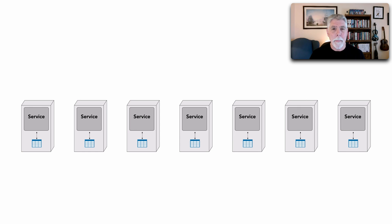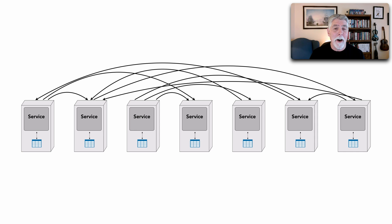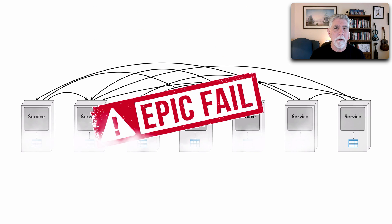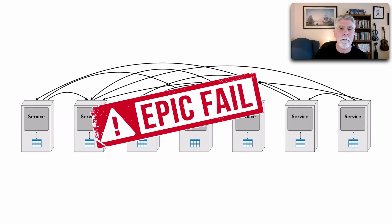But what happens is all the services need to communicate with each other. This turns into a big ball of distributed mud — what some people call a distributed monolith — and it turns out to be an epic failure.